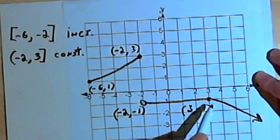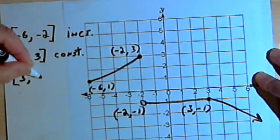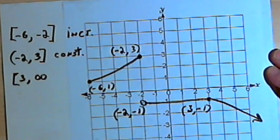After that point, it's decreasing. It's decreasing from 3, apparently, to infinity.